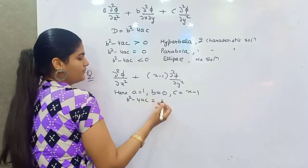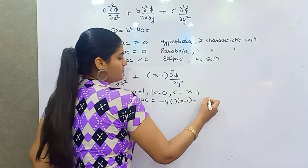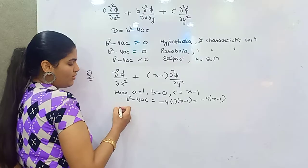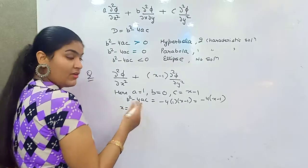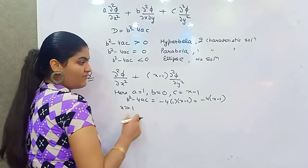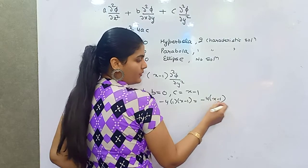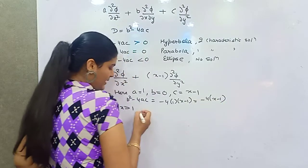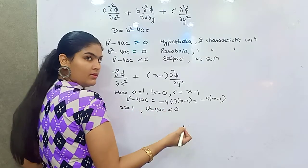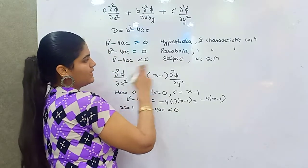Now compute b squared minus 4AC, which gives minus 4 times (x minus 1). If x is greater than 1 — say 2, 3, or 4 — then (x minus 1) is positive, so minus 4(x minus 1) becomes negative. Since b squared minus 4AC is less than zero, the equation is an ellipse when x is greater than 1.